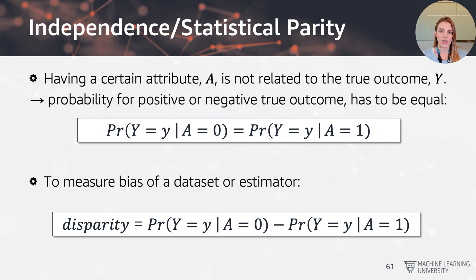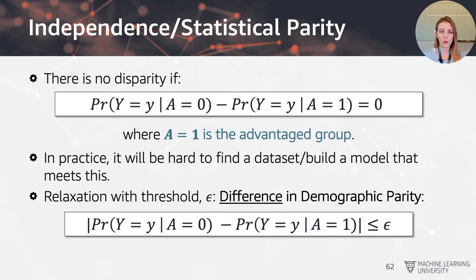To measure the bias of the dataset or estimator, we subtract those two probabilities from one another to get a disparity measure — the probability of an outcome given you don't have the attribute, minus the probability given you do. There is no disparity if the difference is equal to zero. We define A equals one as our advantaged group — the group with more positive outcomes overall. In practice, achieving exactly zero is very hard, so we relax the equation with a threshold epsilon.